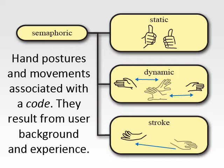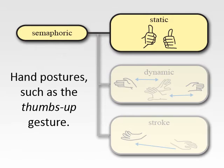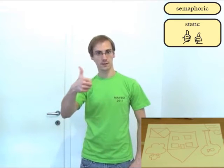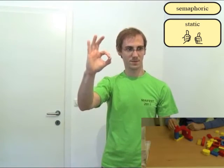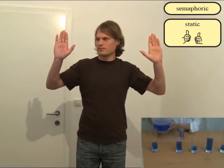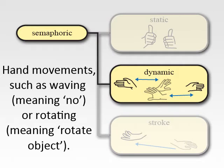Semaphoric gestures are hand postures or movements associated with specific codes, which result from the user's background. Semaphoric static gestures are hand positions such as thumbs up, ok sign, stop sign, or indicating numbers. Semaphoric dynamic gestures involve hand motions. For example, rotating hands or waving.